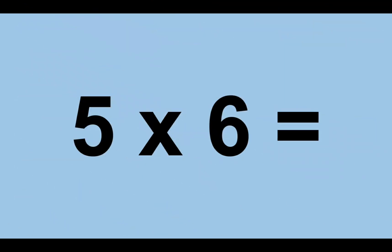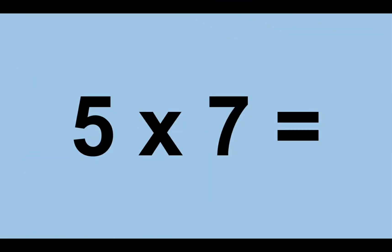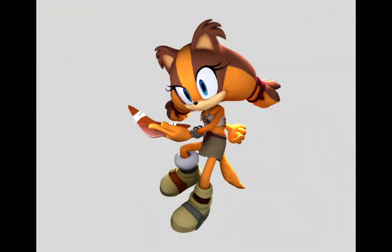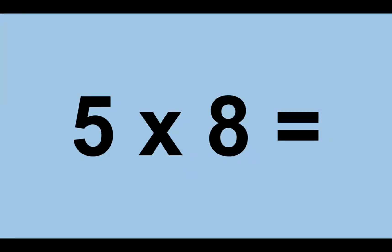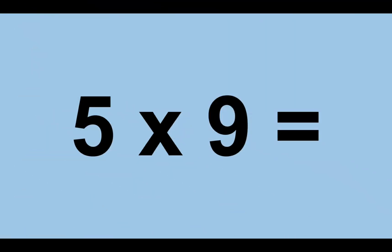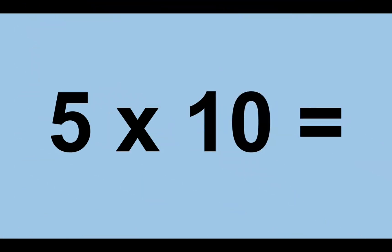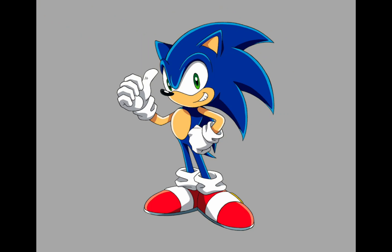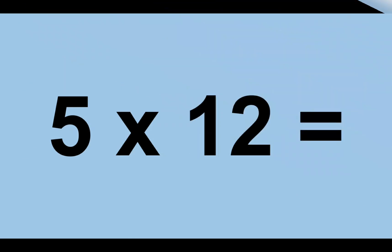Five times six equals thirty. Five times seven equals thirty-five. Five times eight equals forty. Five times nine equals forty-five. Five times ten equals fifty. Five times eleven equals fifty-five. Five times twelve equals sixty.